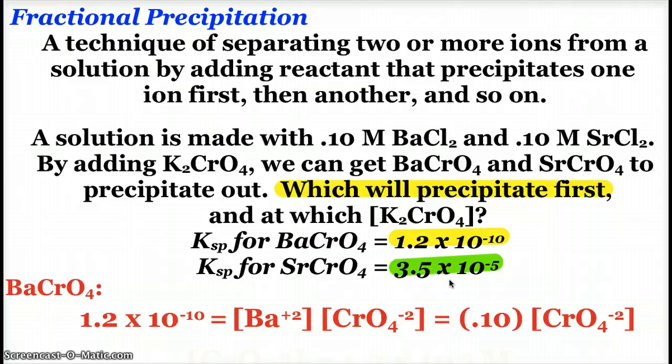Qualitatively, you can pretty much assume that usually the smaller KSP value is the one that's going to precipitate first. But mathematically, you can solve it like this.